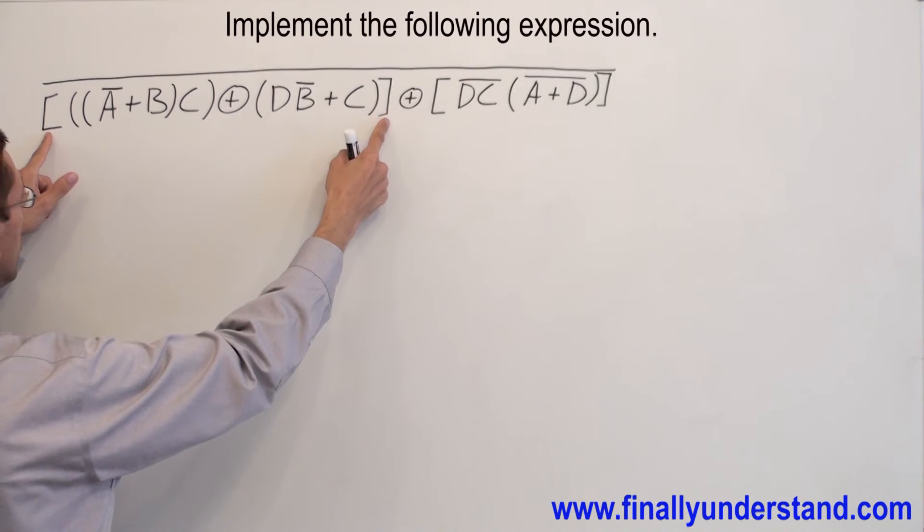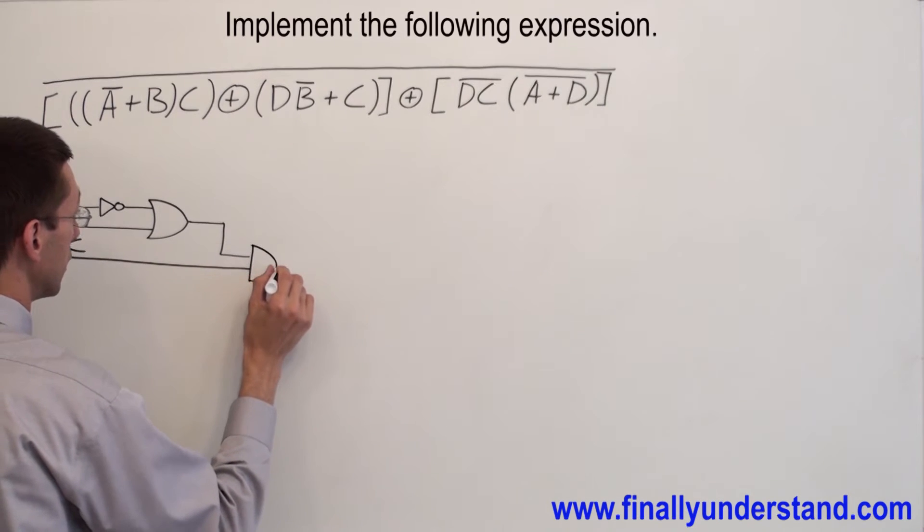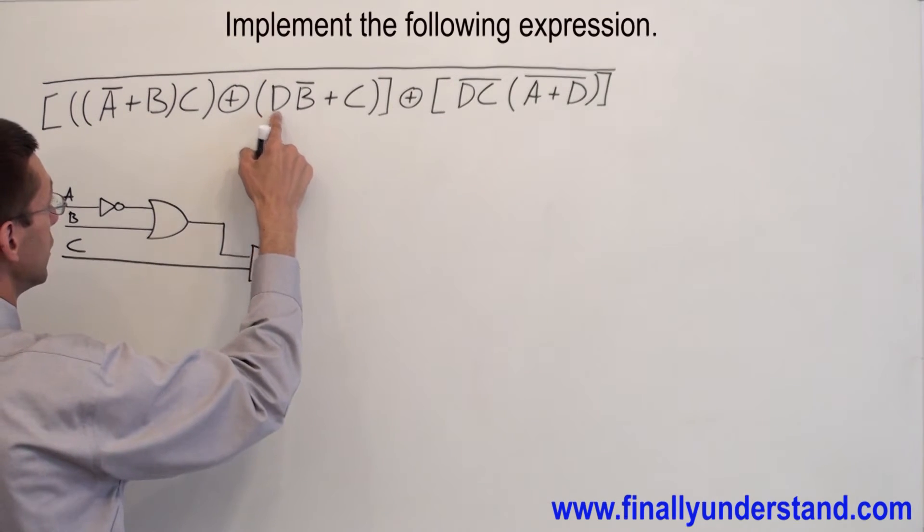I'm going to start from these brackets first. I'm going to start from the internal parenthesis. I have A bar, that's why I'm going to have an inverter, and B. Because I have A bar and B, I have an OR gate, because I have A bar or B. This OR gate is ANDed with C. Now I finish with this part.